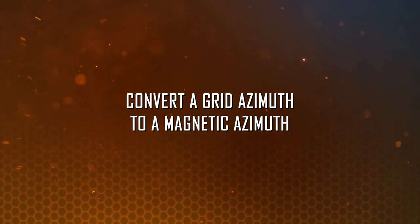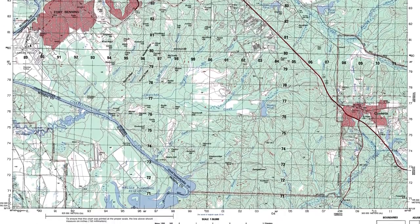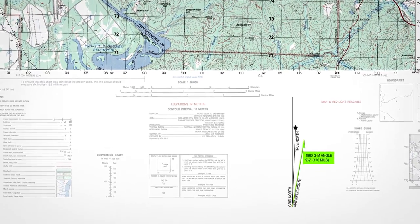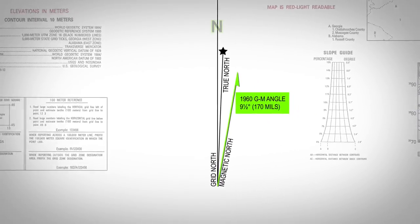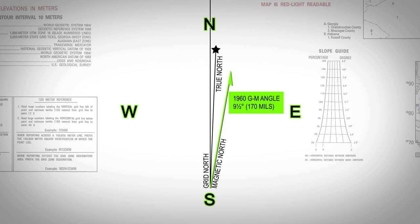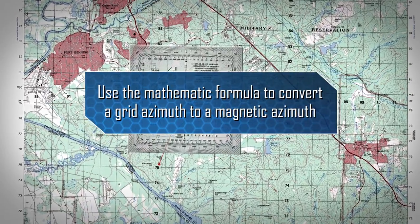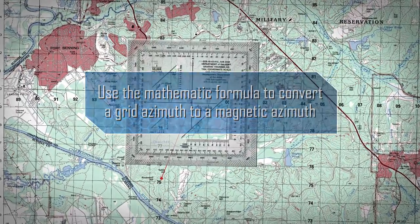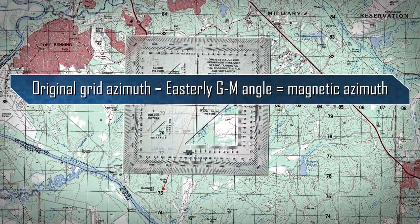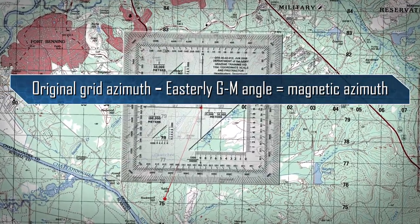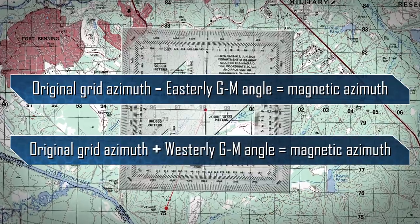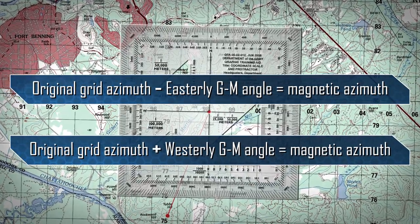To convert a grid azimuth to a magnetic azimuth, first locate the GM angle, then determine whether the GM angle is easterly or westerly. Looking at the declination diagram, take note of the GM angle relative to the line labeled grid north. This example's declination diagram indicates the GM angle is easterly. Subtract an easterly GM angle from the original grid azimuth to convert to a magnetic azimuth. Add a westerly GM angle to the original grid azimuth to convert to a magnetic azimuth.